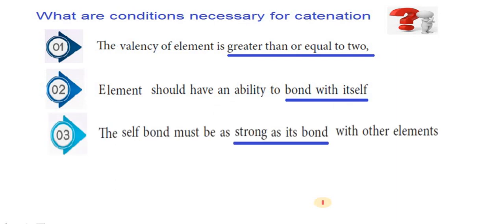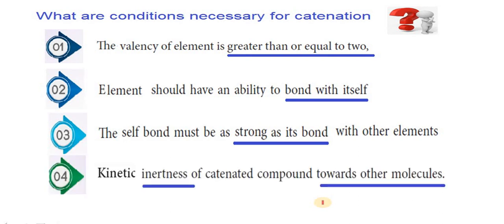Point number three. The self bond must be as strong as its bond with other element. Yes. Carbon bond carbon is strong. Similarly, carbon bond with O. Fourth point. Kinetic inertness of catenated compound towards other molecules. Yes. If you see hydrocarbons are the compounds containing carbon carbon covalent bond. Hydrocarbon shows kinetic inertness towards other molecules. It does not readily react with other molecules. Means carbon carbon sigma bond is strong. So, all the four points are easy to understand. This is very important for examination point of view.